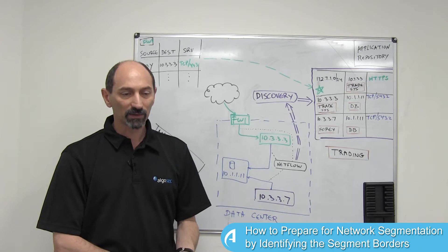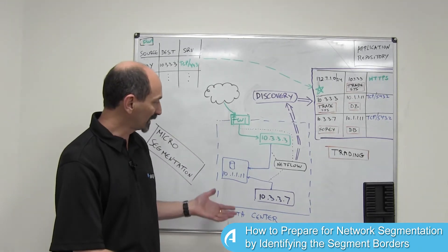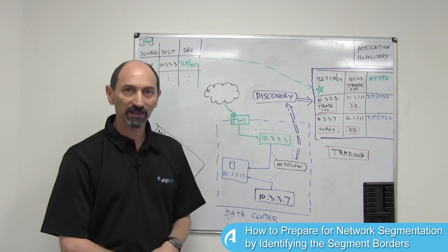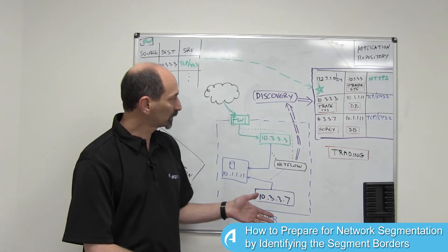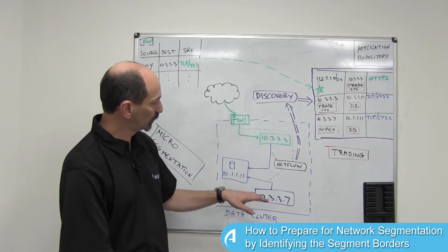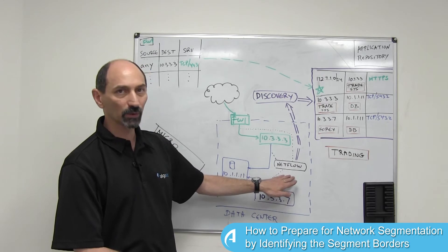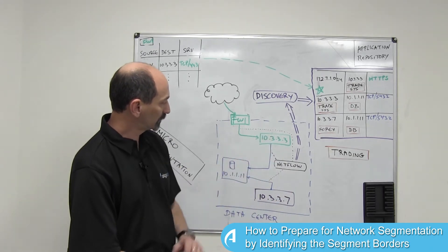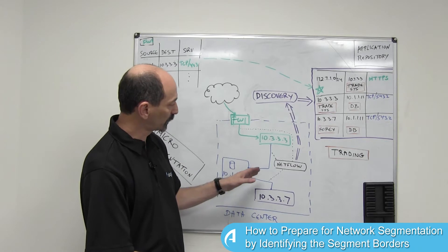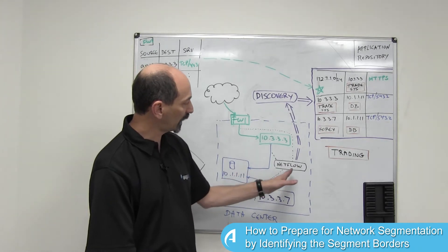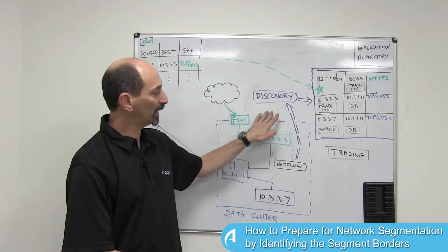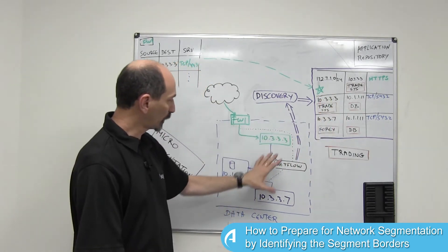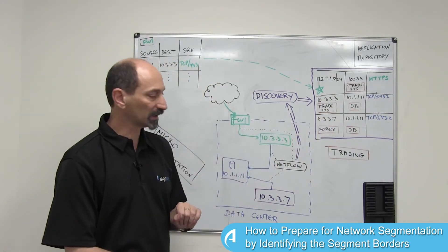The first thing you need to do is identify all the network flows happening inside the data center. A good way to do so would be to use a netflow source, having it sniff all the traffic internally and provide netflow output to a discovery engine, which would then identify the network flows inside the data center.